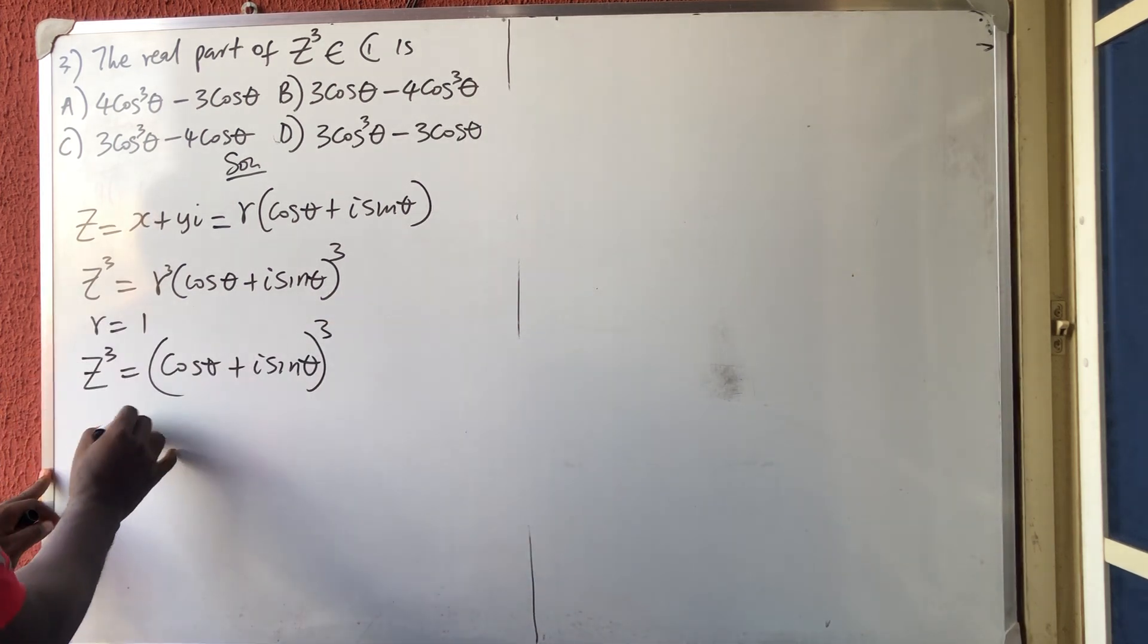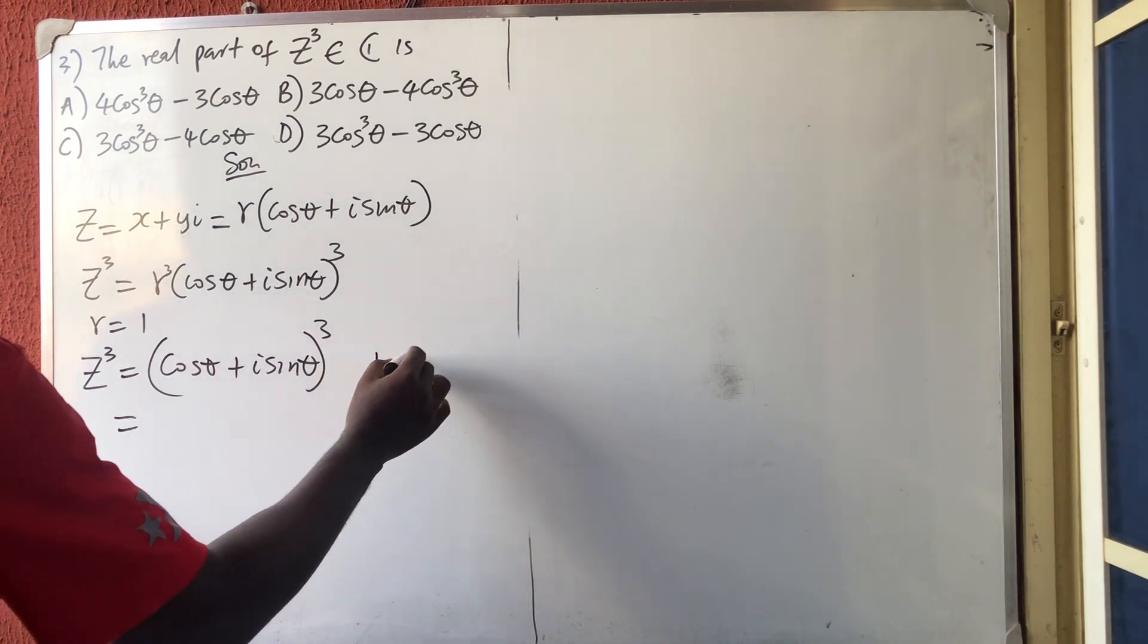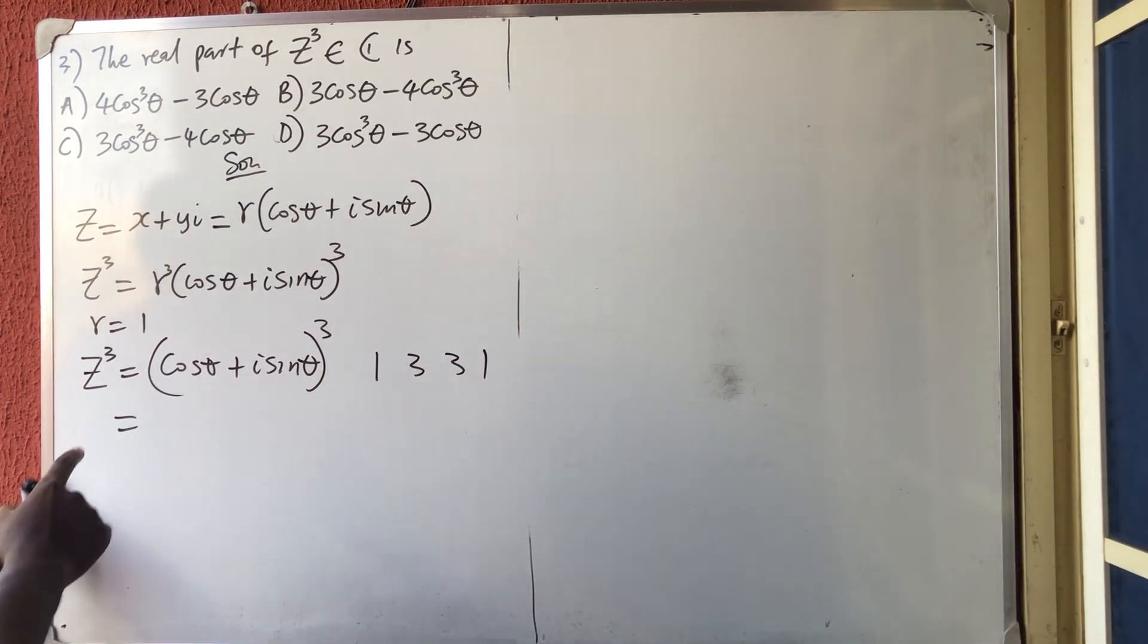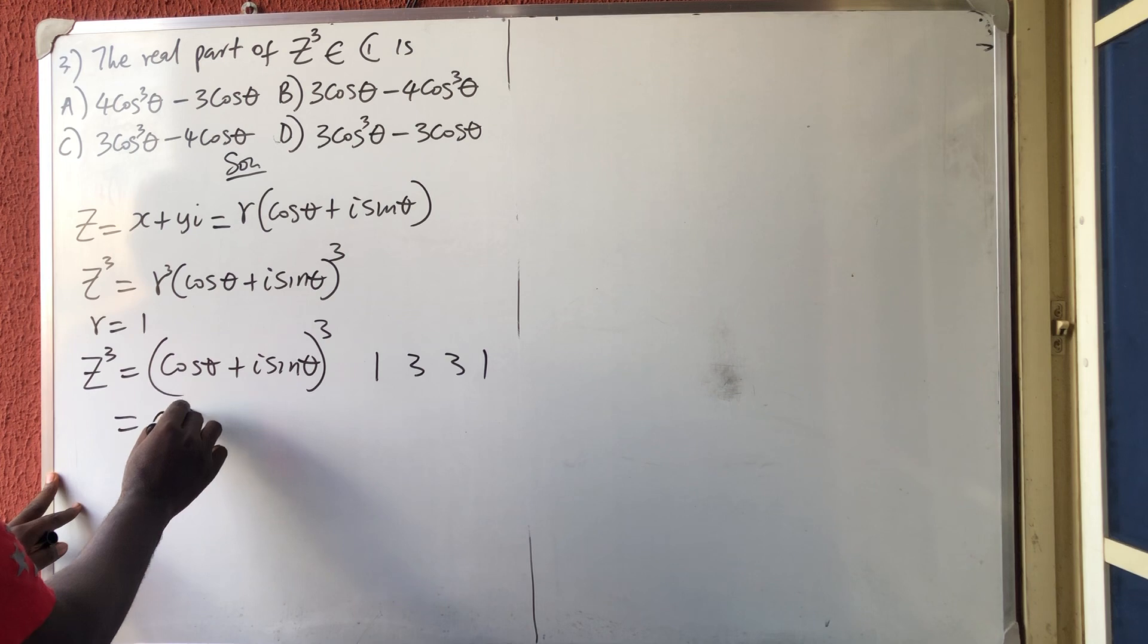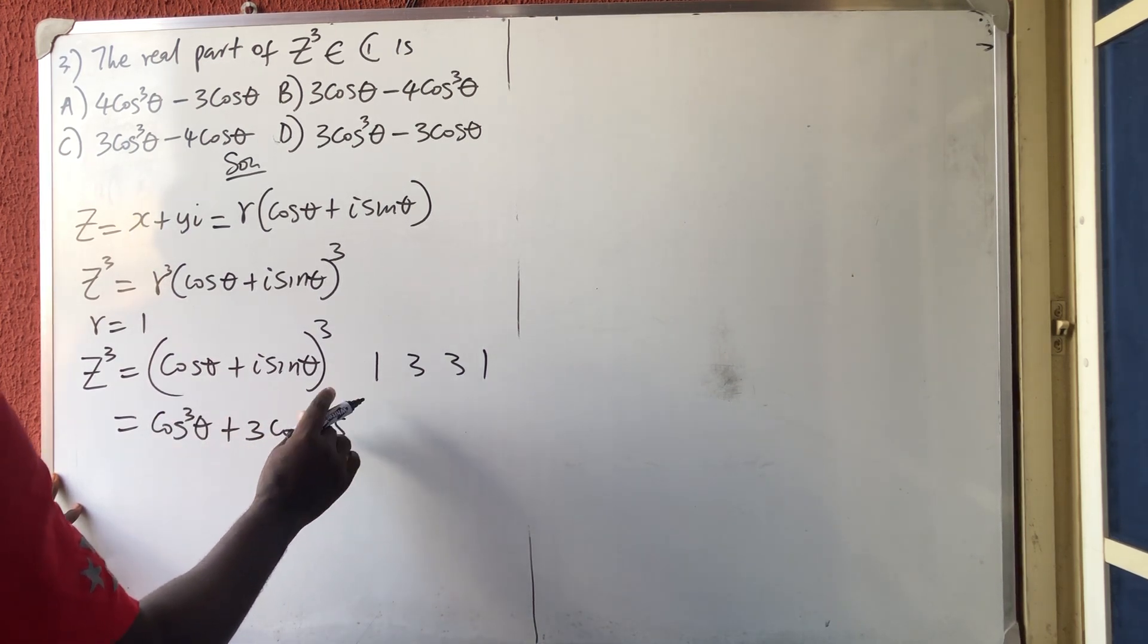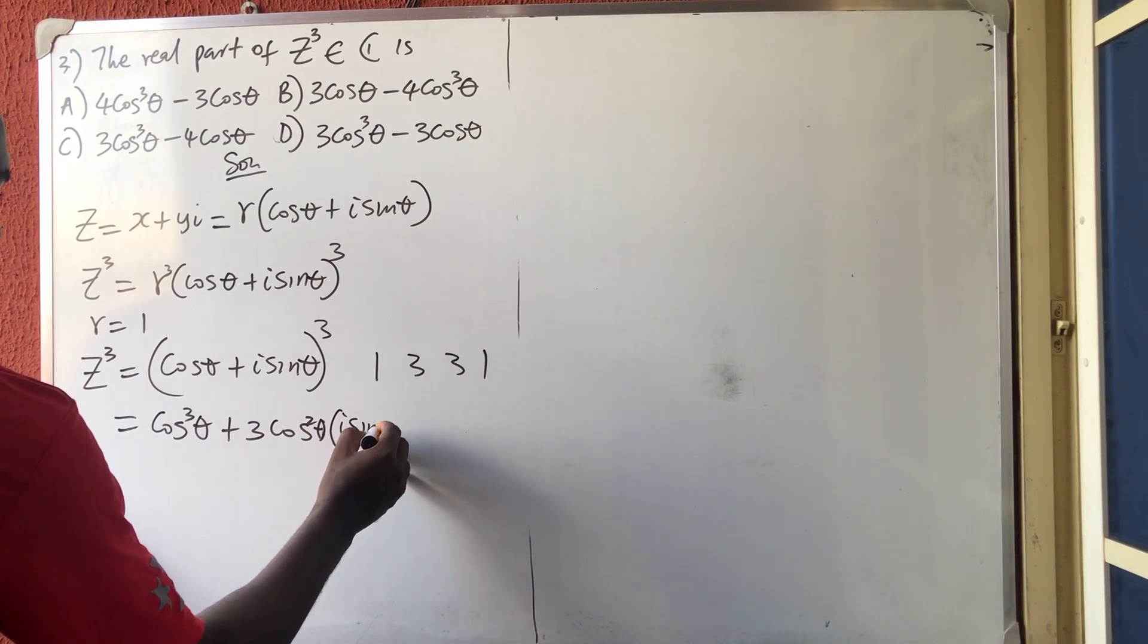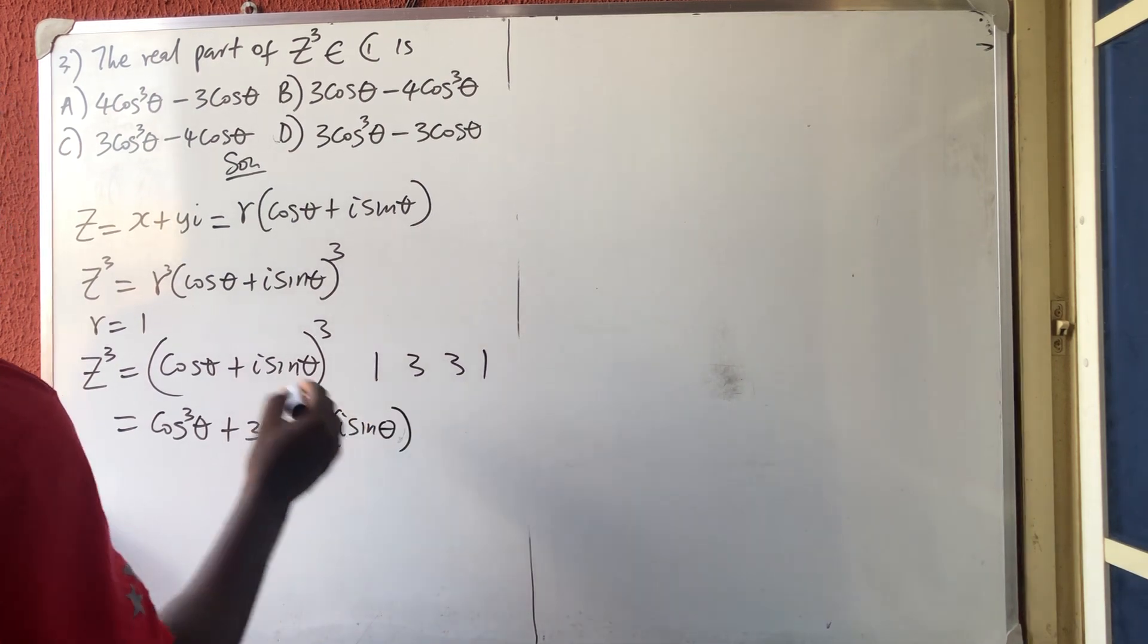If we expand this using Pascal's triangle, we have the coefficients are 1, 3, 3, 1 according to Pascal, which is cos raised to the power 3 theta plus 3 cos square theta in bracket of i sine theta.